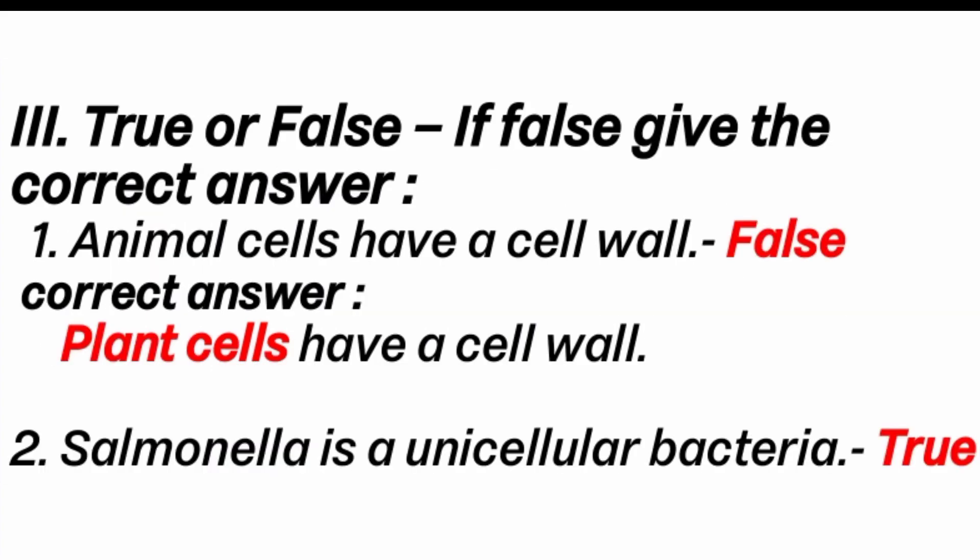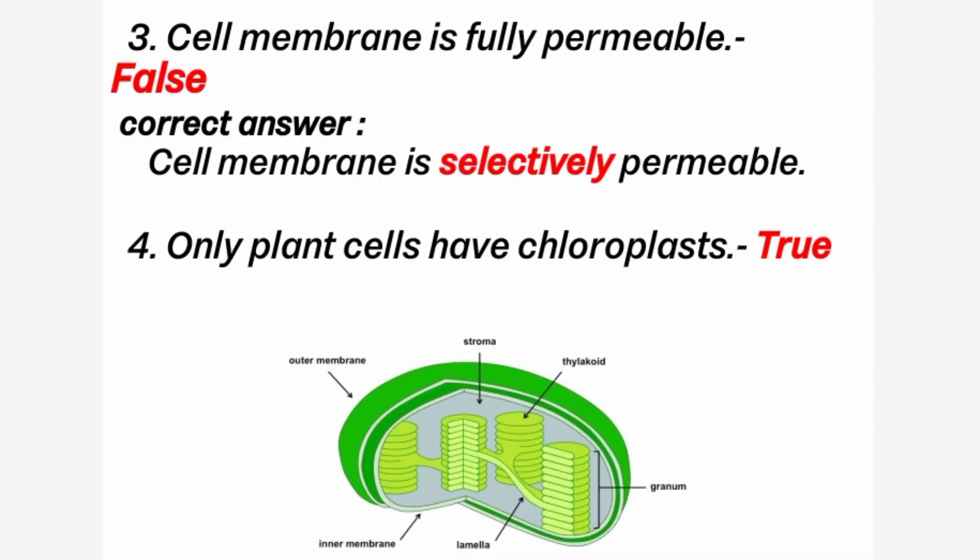Third section: true or false — if false, give the correct answer. First question: animal cells have a cell wall. Answer is false. Correct answer: animal cells do not have a cell wall; plant cells have a cell wall. Second question: Salmonella is a unicellular bacterium. Answer is true. The typhoid disease is caused by Salmonella typhi bacteria. Third question: cell membrane is fully permeable. Answer is false. Correct answer: cell membrane is selectively permeable, because it allows only certain substances to pass in and out of the cell.